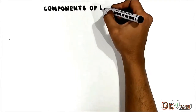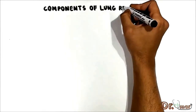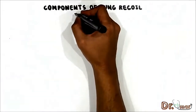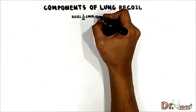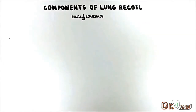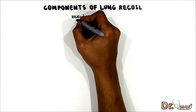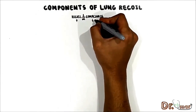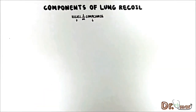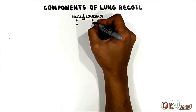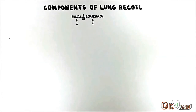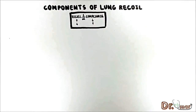This brings us to the components of lung recoil. It is very important to note that lung recoil is inversely related to compliance. If recoil increases, compliance decreases and it is difficult to stretch the lung. If recoil decreases, compliance increases and it will be easy to stretch the lung, therefore also reducing the effort required by the respiratory muscles to expand the lungs.